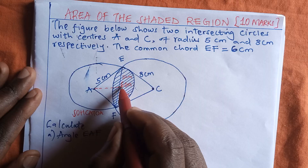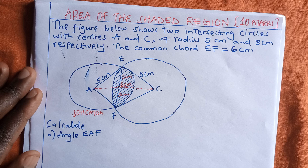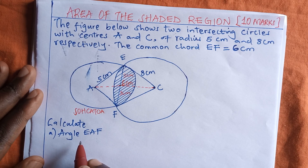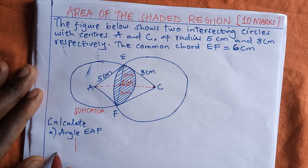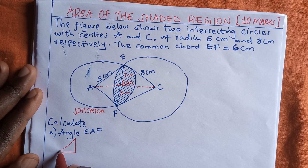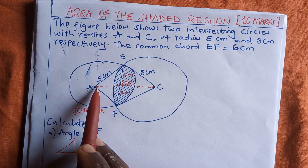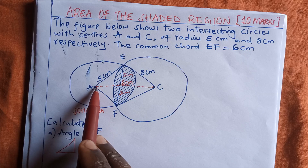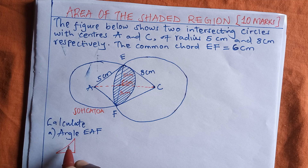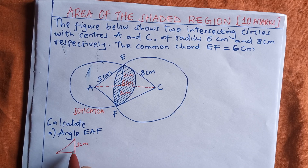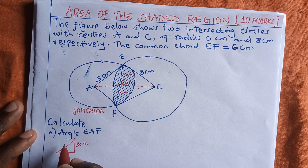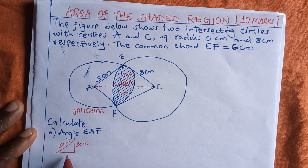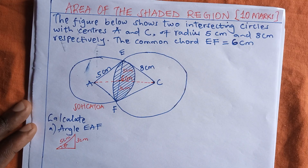We divide angle A into two halves, and we also divide angle C the same way. We extract the triangle we are interested in. Remember, we have divided the angle into two halves, so the answer we get we must multiply by two to get the whole of angle A. The opposite side is three centimeters and the hypotenuse is five centimeters.